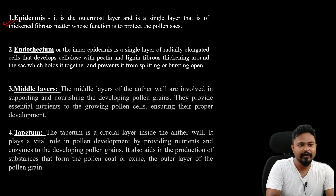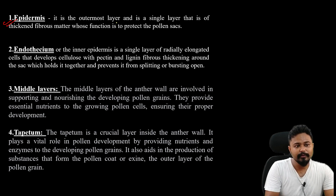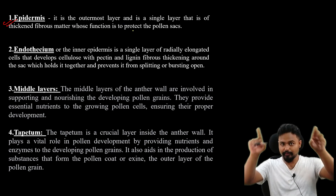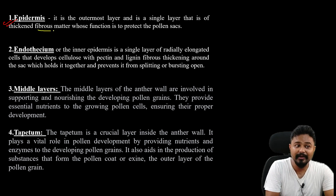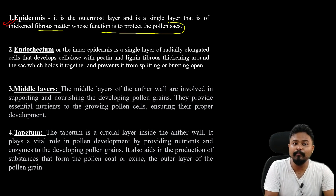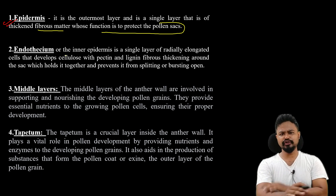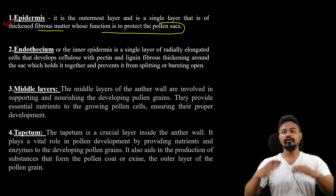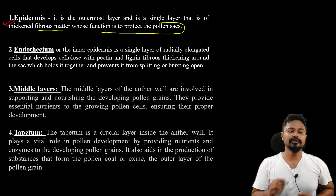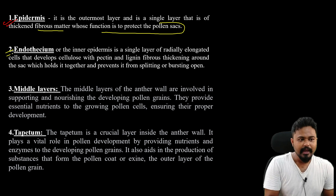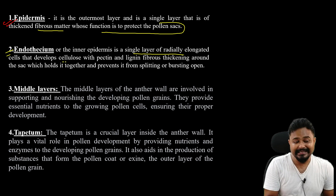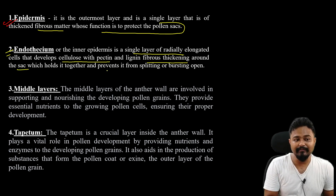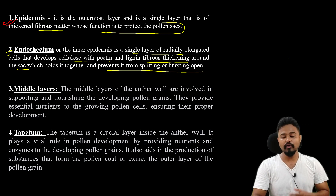Epidermis — what is its function? It is the outermost layer, a single layer that is thick and fibrous, whose function is to protect the pollen cells. Protection. The endothecium is a single layer of radially elongated cells that develops cellulose with pectin and lignin fibrous thickening around the sac, which holds it together and prevents it from splitting or bursting open.